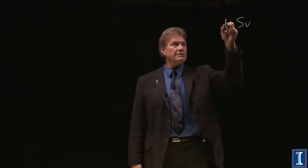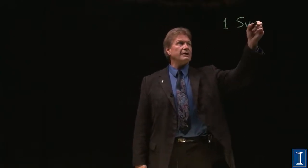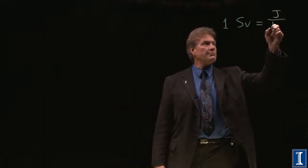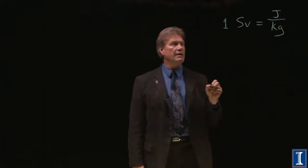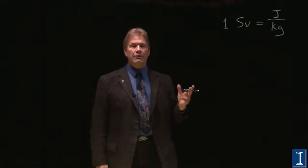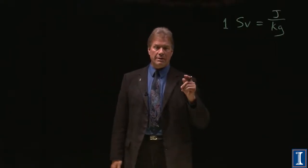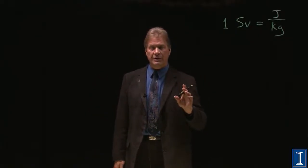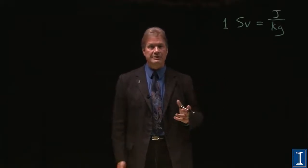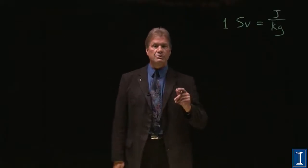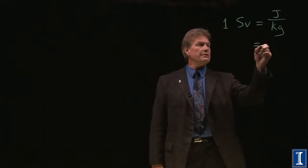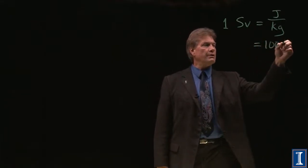It turns out that one sievert is actually a lot of radiation — this is a joule absorbed per kilogram. There's a more common unit, at least in the United States, called the REM, the radiation equivalent mammalian. Because many tests are done on animals and all us mammals are the same, we've got the same organs. The conversion is that one sievert is equal to one hundred REM.